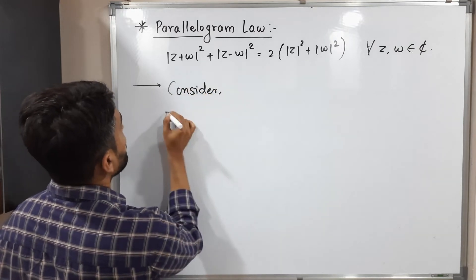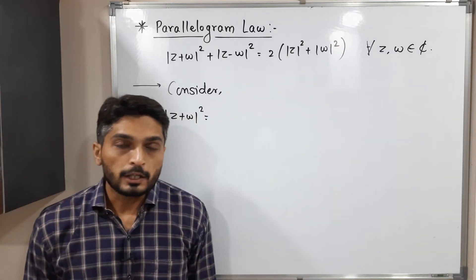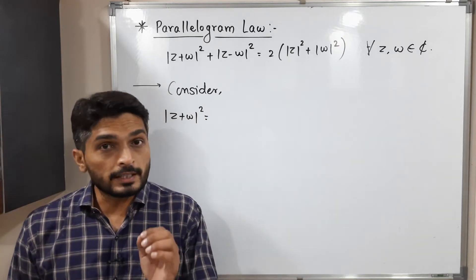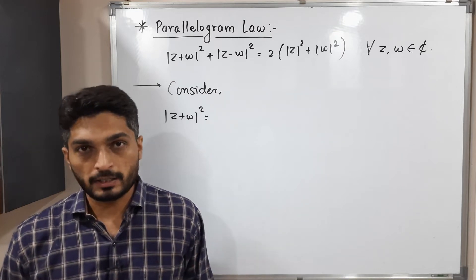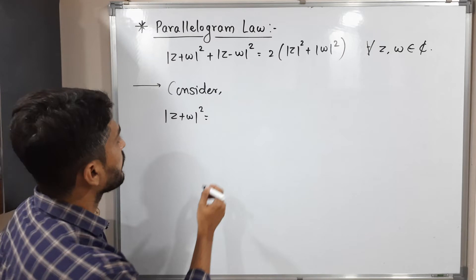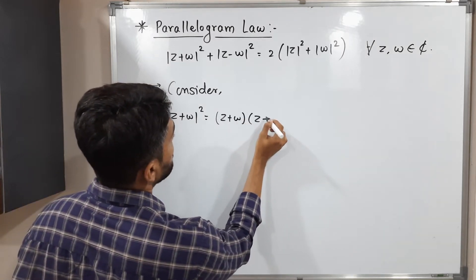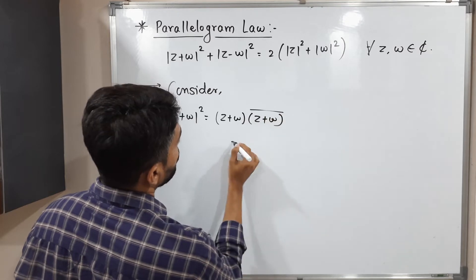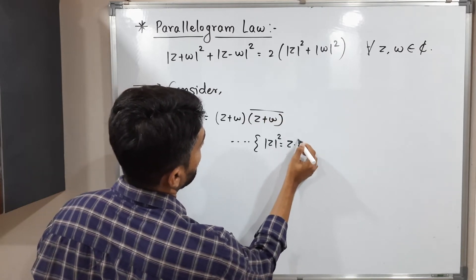So we will consider mod z plus w square. Tell me, do you remember in previous video, we have already seen one result that is mod z square is equal to z into z bar. So let me use that result. So using that result, what can we write? z plus w, z plus w bar.